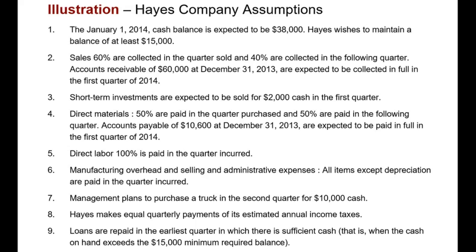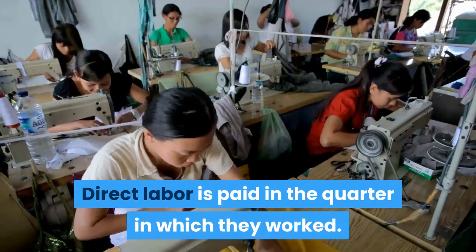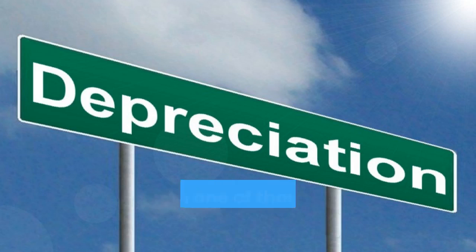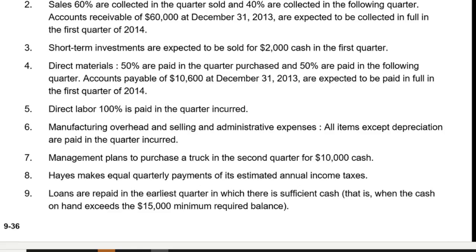There's also going to be a short-term investment cashed in for $2,000. For cash disbursements, direct materials are paid 50 percent in the quarter purchased and 50 percent in the next quarter. The accounts payable at the beginning of this year is $10,000 and that's expected to be paid. Direct labor is paid in the quarter in which they worked. Manufacturing overhead and selling and admin are paid in that quarter, but in each of those budgets we have depreciation — a non-cash expense — so we must separate that out. We plan to purchase a truck in the second quarter for $10,000 cash.